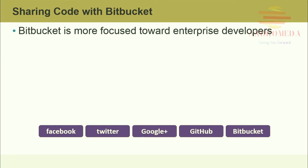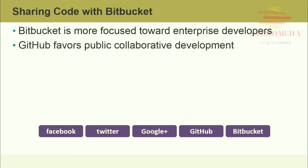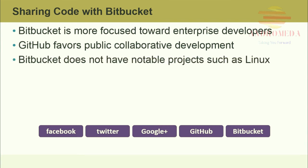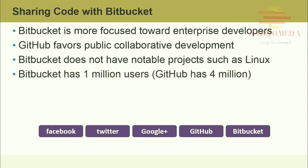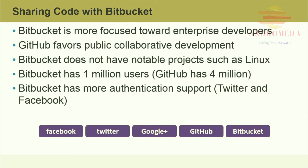Bitbucket is more focused toward enterprise developers and more private collaborative development. Teams can be built quickly — Bitbucket is free for up to five users on your team and only one US dollar for each additional user. Non-profit and university accounts are also free and receive unlimited private and public repositories. GitHub favors public collaborative development and attracts coders looking to attach their name to an open-source project. Because of this, Bitbucket does not have notable projects such as Linux. Bitbucket has one million users; GitHub has four million.